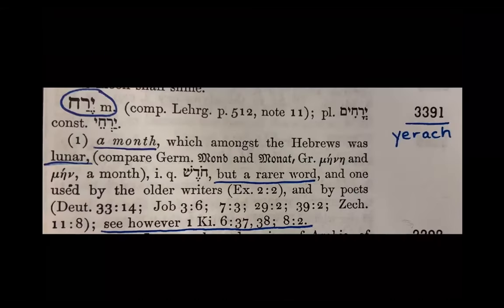Now look at Gesenius's definition of the word 'yerach.' From right to left, the Hebrew letters are yod, resh, and hey — transliterated in English as Y-R-H. Pronounced 'yerach' with the vowel pointings. The lexicon number is Strong's 3391. Gesenius defines it: 'a month, which amongst the Hebrews was lunar.' It is a rarer word — used less often than hodesh in the Hebrew Bible — and was used by the older writers. It references Exodus 2:2 regarding Jochebed hiding her baby for three months, Deuteronomy 33, and texts in Job, and cross-references First Kings 6:37-38 and First Kings 8:2.